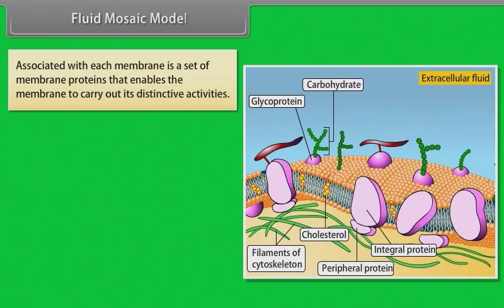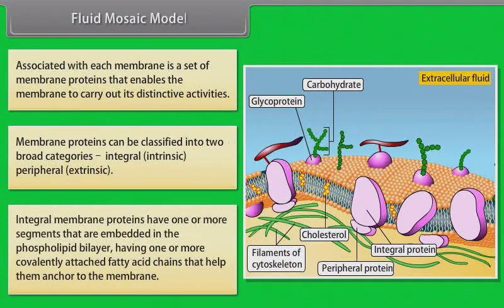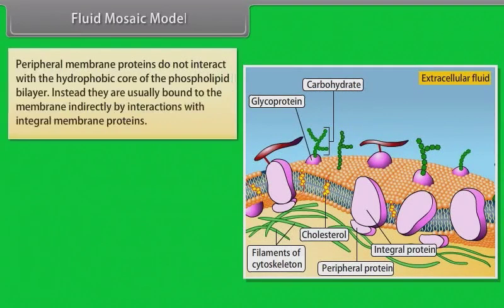Associated with each membrane is a set of membrane proteins that enables the membrane to carry out its distinctive activities. Membrane proteins can be classified into two broad categories: integral (intrinsic) and peripheral (extrinsic). Integral membrane proteins have one or more segments embedded in the phospholipid bilayer, with covalently attached fatty acid chains that help anchor them to the membrane. Peripheral membrane proteins do not interact with the hydrophobic core of the bilayer; instead, they are usually bound to the membrane indirectly by interactions with integral membrane proteins.